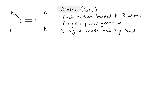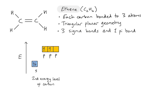Going back to the initial problem: looking at the second energy level of carbon with orbitals represented as boxes, again having only two half-filled orbitals suggests carbon should only be able to form two sigma bonds. So something must happen in order to achieve the structure we've drawn. Hybridization occurs again — this time we only need to form three hybrid orbitals to form the three sigma bonds.